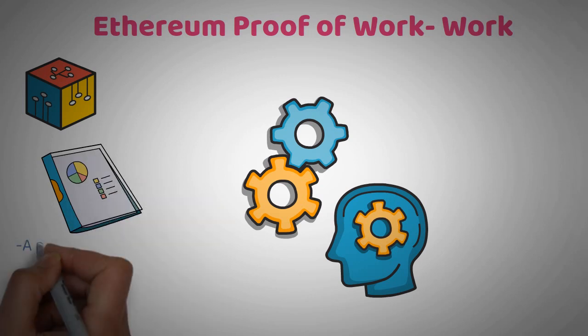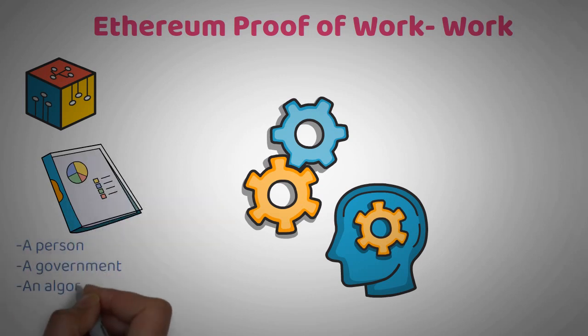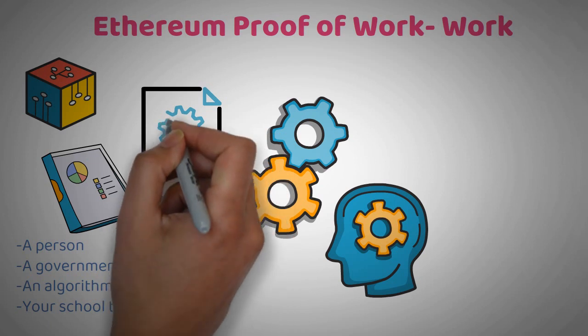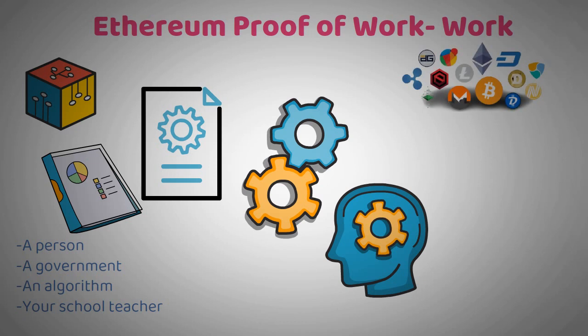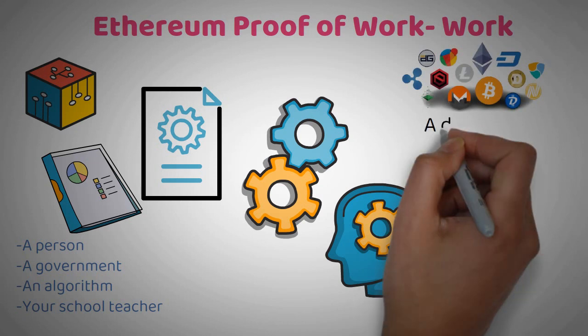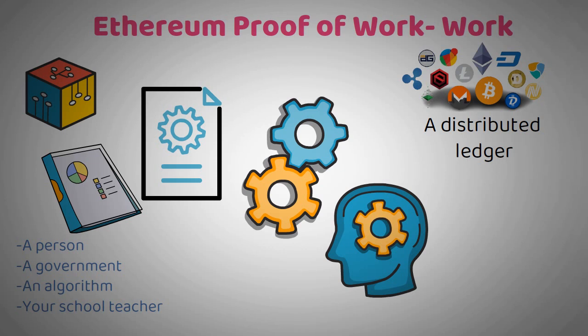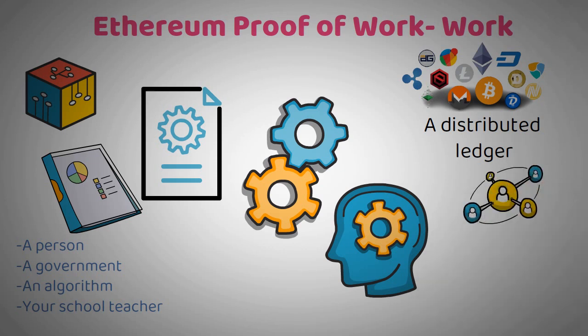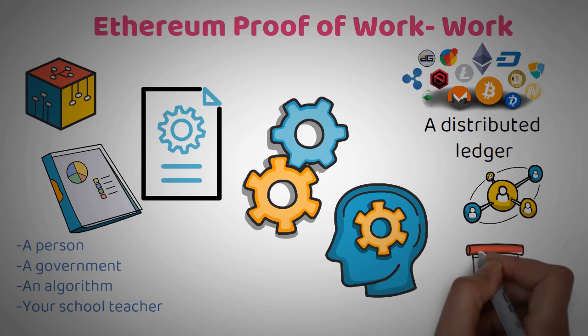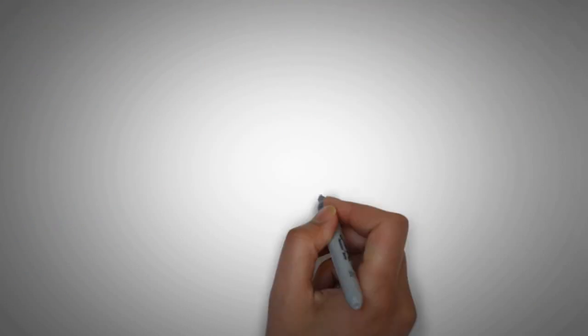This could be a person, a government, an algorithm, or your school teacher in the case of a school's database. The idea is that an entity has to be responsible for adding, deleting, and maintaining the records. In the case of crypto, its database of the blockchain, like we call it, works like a distributed ledger. This means that it is self-governing since multiple people can add to it, and there is no central authority. So how do we determine who gets to add the next block of information? This is where consensus mechanisms come in.